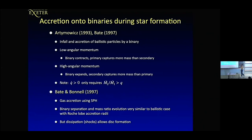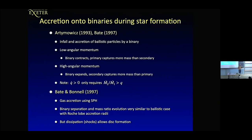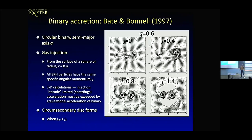Later on in my PhD we did the same thing but with gas — we turned on viscous and pressure forces, giving us SPH, and looked at gas accretion. I still find this somewhat amazing, but in terms of binary separation and mass ratio evolution, if you assume that in the ballistic case the particles are accreted when they hit the Roche lobes, you get almost identical behavior from ballistic particles as from the SPH simulations. The difference, of course, is the presence of dissipation allows you to form discs.